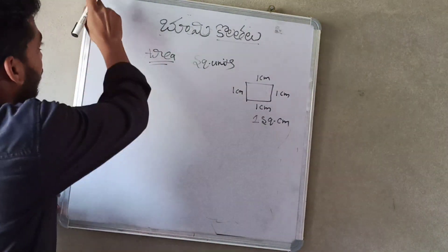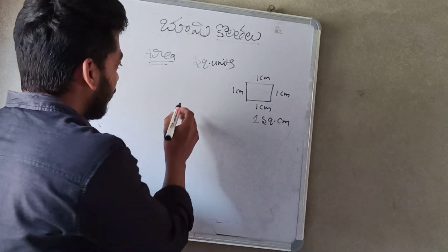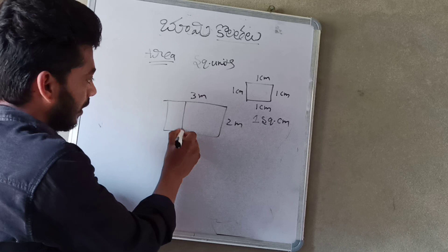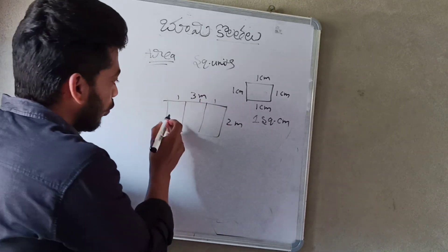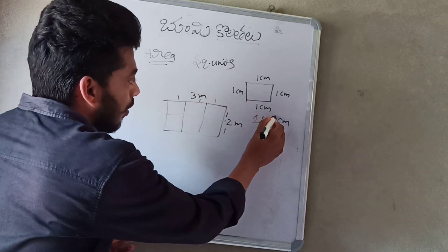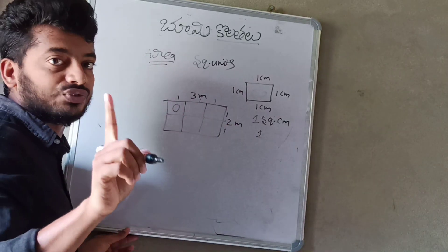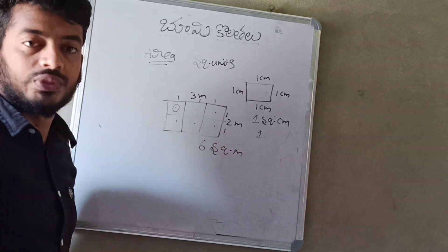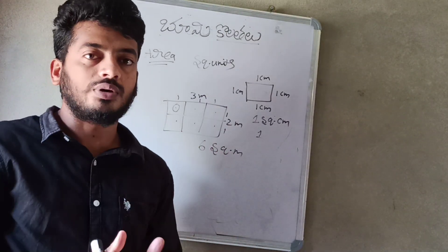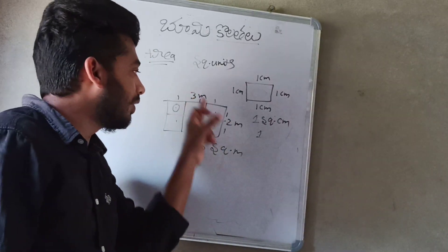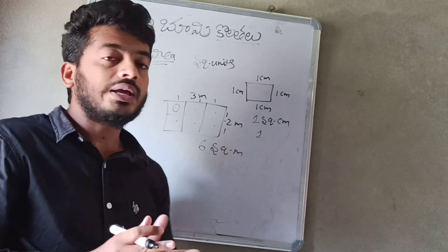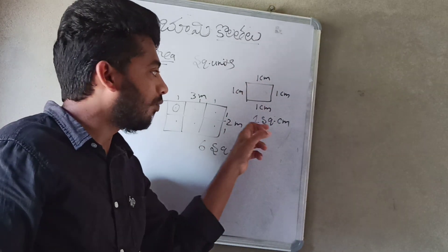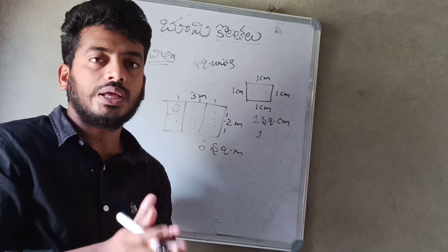For example, one square meter. If we have a land of 3 meters by 2 meters — three meters, two meters — we can count the boxes: one, two, three, four, five, six. So the area is 6 square meters. Simply, 3 multiplied by 2 equals 6 square meters. Each side 1 cm gives 1 square centimeter; each side 1 meter gives 1 square meter.